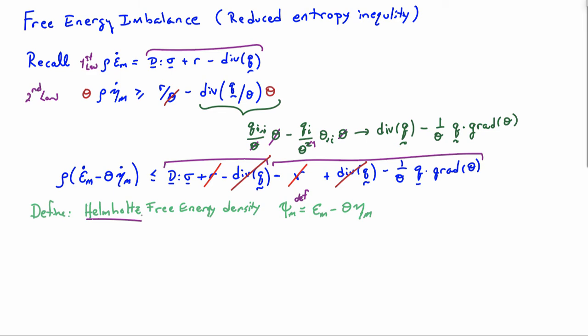So if I plug that into the expression that we have, I end up with minus rho psi M dot minus rho eta M theta dot plus the stress power minus 1 over theta Q dot grad theta greater or equal to 0.